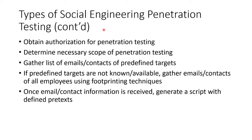Obviously when you are setting up the authorization for pen testing, you include social engineering in it and you determine the scope of it — for example, only employees, only during working hours, no friends and family, that kind of thing. You'll gather a list of emails and contacts of predefined targets, and you won't necessarily ask the company for the emails but you'll find them the way a black hat would.